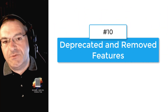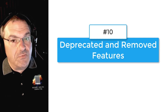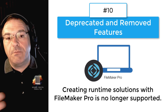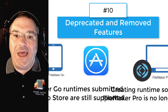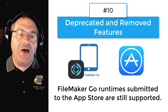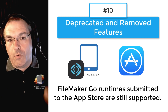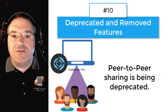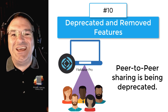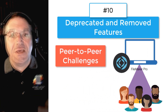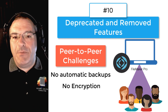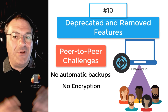Number ten covers deprecated features and features that have been removed. Most of these are not in heavy use. For example, creating runtimes in FileMaker Pro for Mac or Windows is no longer supported — though creating a runtime for FileMaker Go to submit to the Apple Store is still available. Additionally, Claris has announced plans to deprecate peer-to-peer sharing, where one FileMaker user shares with a couple of others in an ad hoc network. That setup has challenges: no automatic backups, no encryption or security. Peer-to-peer sharing is not the best way to share a FileMaker application with your team.